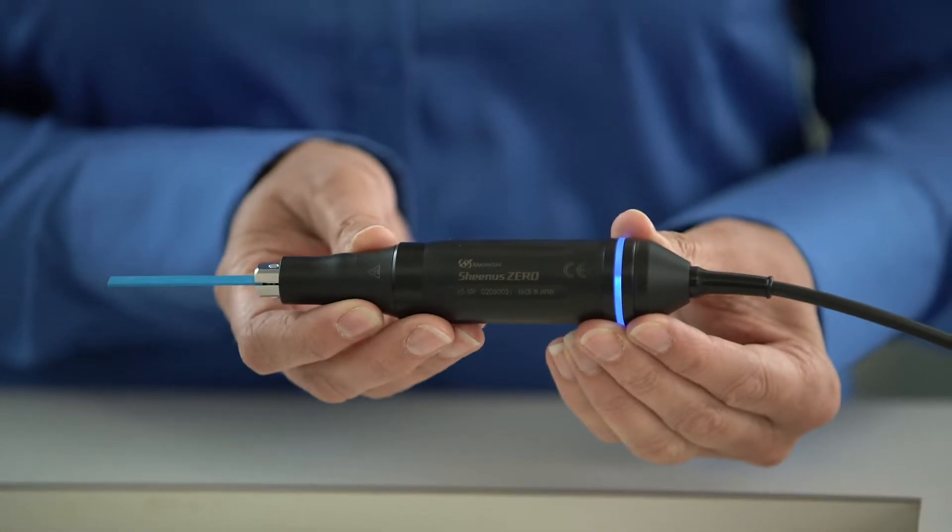Some of the key features of the Sheenus Zero are it is ergonomic and easy to maneuver. It's compact and lightweight.